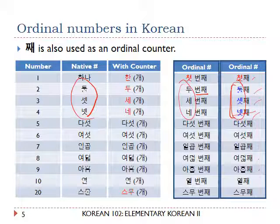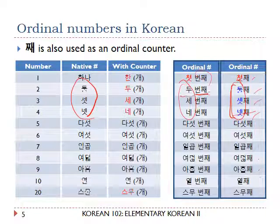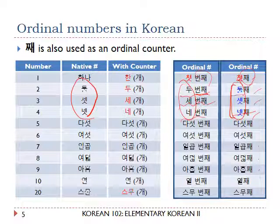So be careful. With the counter 번째, you say 두 번째, 세 번째, 네 번째. But with the counter 째: 둘째, 셋째, 넷째 — these are the forms of the native number in isolation.